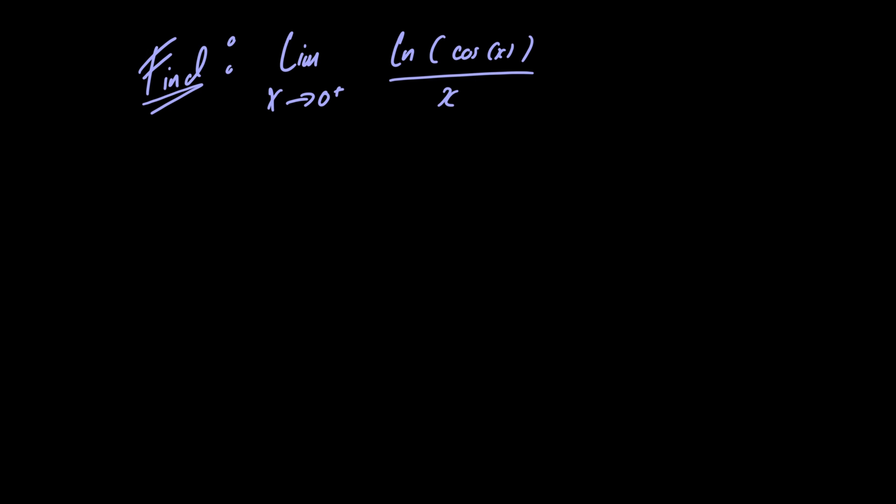Now if we just let x approach 0 from the right, in the numerator we have the natural logarithm of cosine of 0, which is just equal to the natural logarithm of 1, which is equal to 0. And of course in the denominator we just have 0. So our limit is of the form 0 over 0.